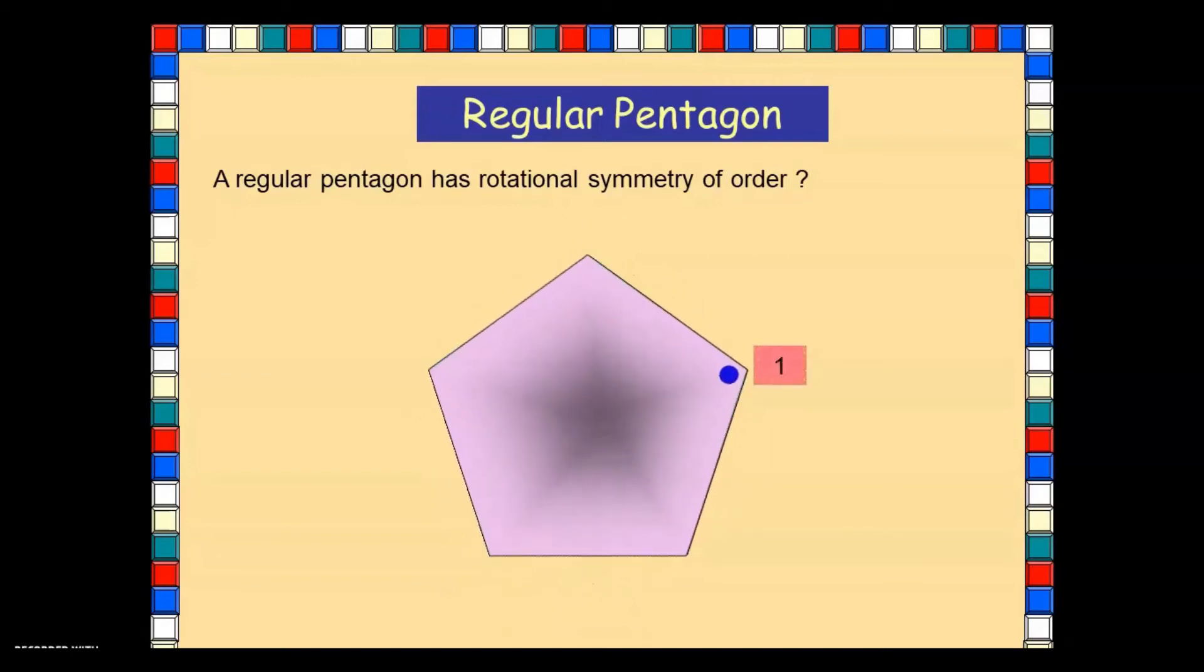A regular pentagon: 1, 2, 3, 4, and 5. So it has order 5. Well, what do you notice about the order of rotational symmetry in regular polygons? It's the same as its number of sides.